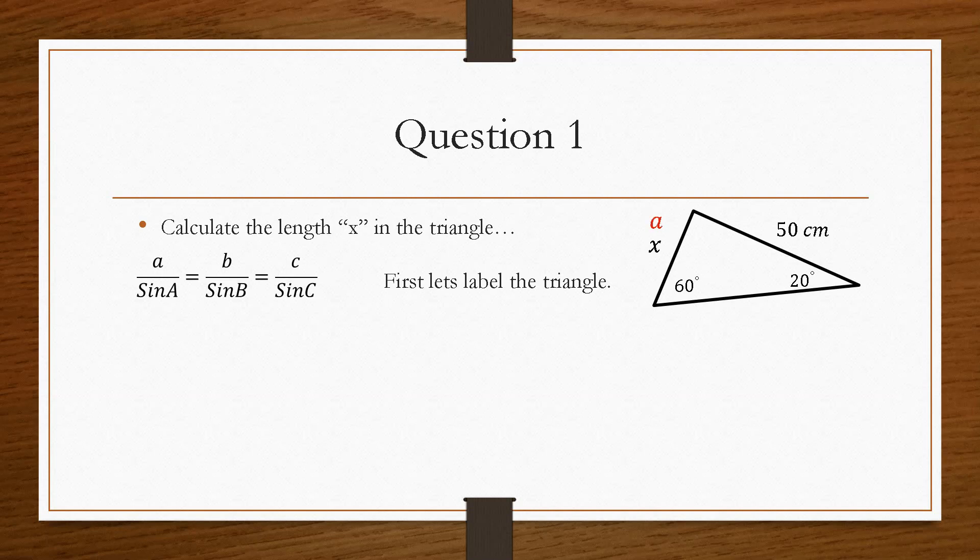Now when we label a side, for example we will label side x as lowercase a, the angle directly opposite that side is its reciprocal capital letter. So in this case 20 degrees is capital A. By the same process, if small b is 50, then capital B is directly across from that side, so capital B must be 60. We can neglect the C term, and usually in your exam you always tend to neglect the third term. To keep things simple, I tend to use just A and B.